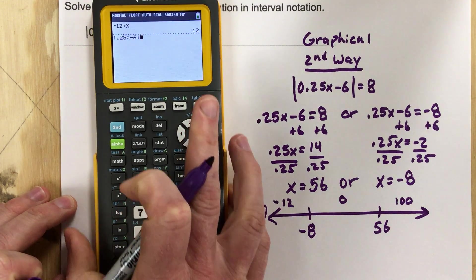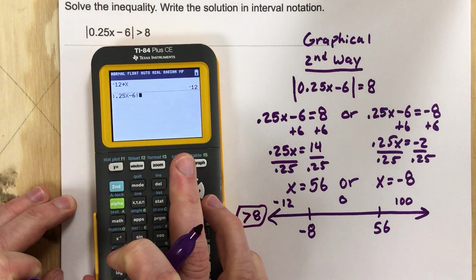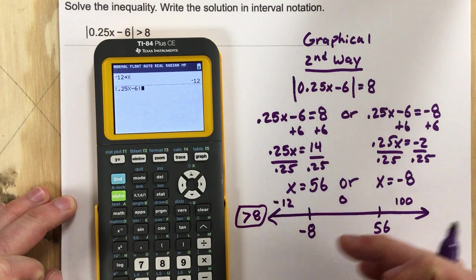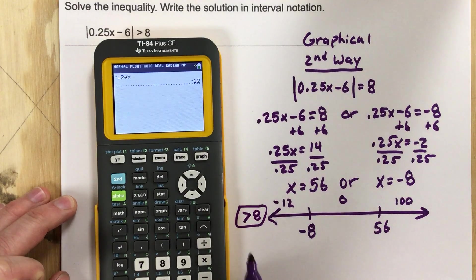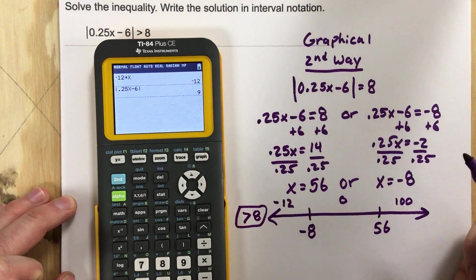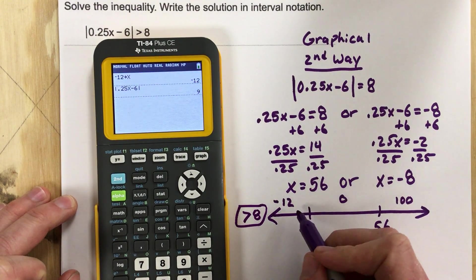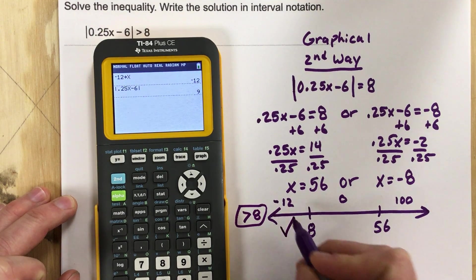So if we look at the original function here, I'm looking to see is this thing greater than 8. Well I end up with 9. Is 9 greater than 8? It sure is. So I'm going to put a check mark here, this area works.